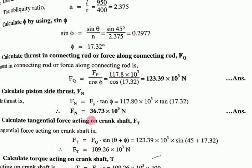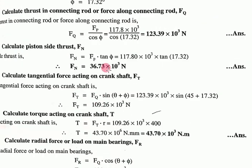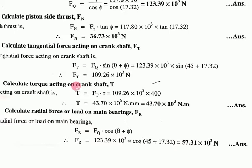Piston side thrust is the load acting on the piston from the cylinder wall. Fn = Fp tan φ. This equation we derived last time. By putting the values, we can find the normal force or thrust force.